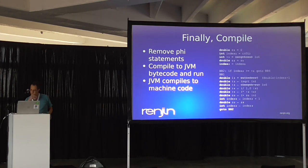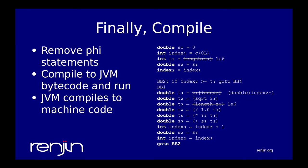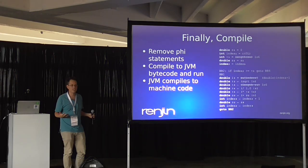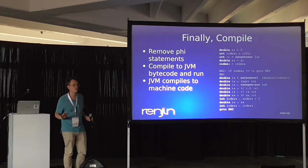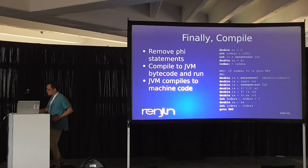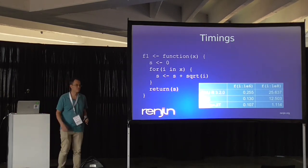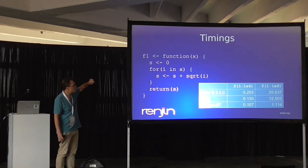By the time we get to the compilation stage, we know everything about the loop body. If there's something really dynamic — like somebody calling source() in the middle of the loop body — we say okay, you're on your own, and run it through the interpreter. But if it is really simple code, the results are astounding.